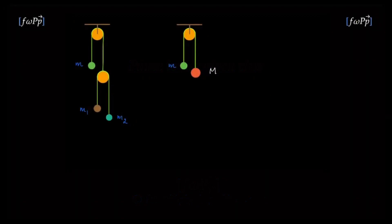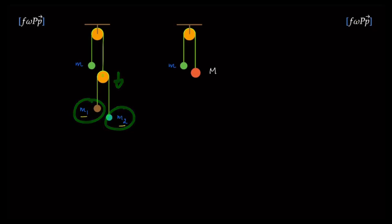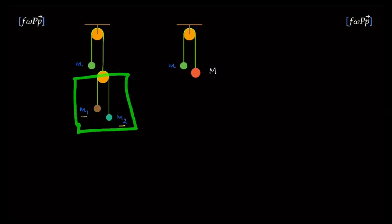Let us start with the simple case when m1 equals m2. As this pulley moves down, the two masses are not going to move with respect to that pulley — they stay put. If the pulley has an acceleration downwards, both masses will have equal acceleration downwards. Therefore, it is as good as the whole system being stationary. The mass of that system is made up of m1 and m2, both not moving and both equal.